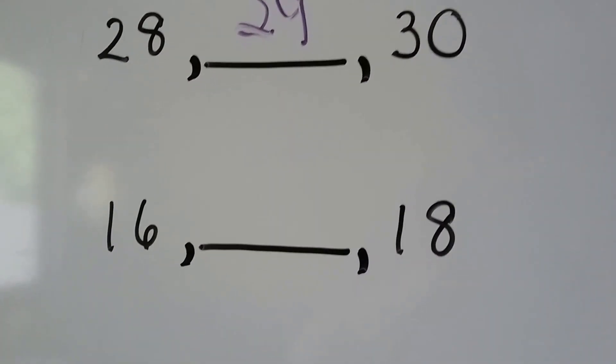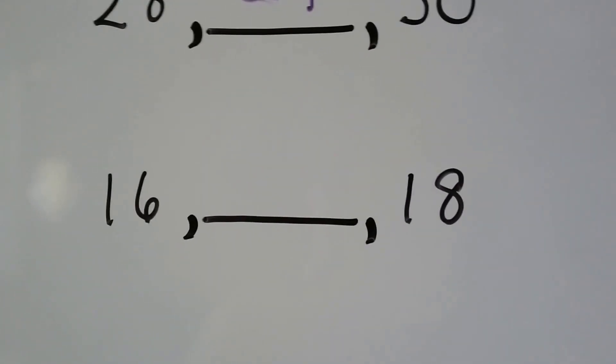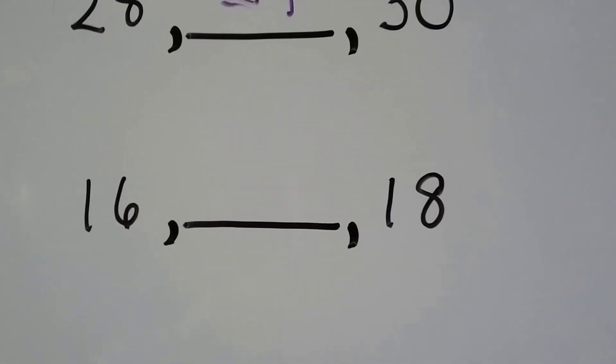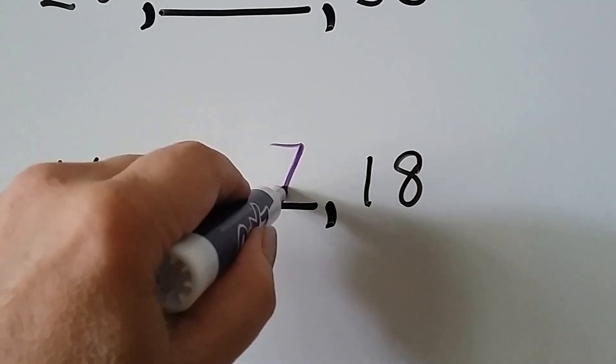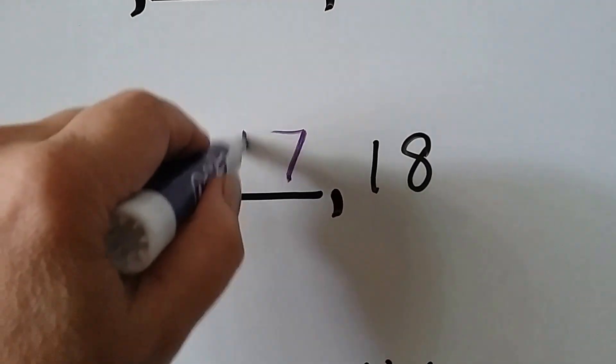What comes in between 16 and 18? 16 has six ones. We need seven ones and then eight ones, so we're going to have 17.